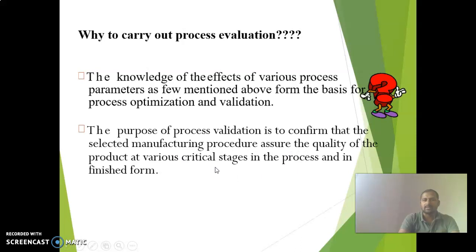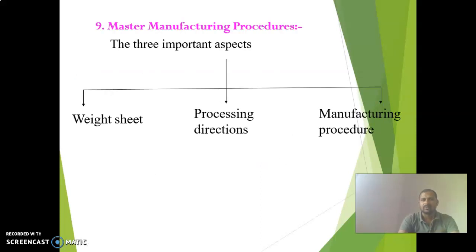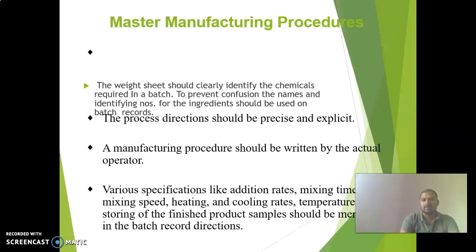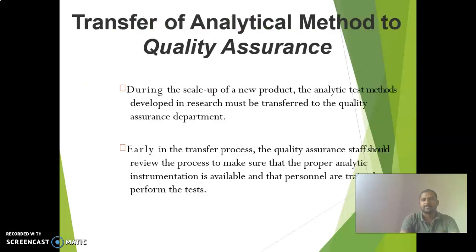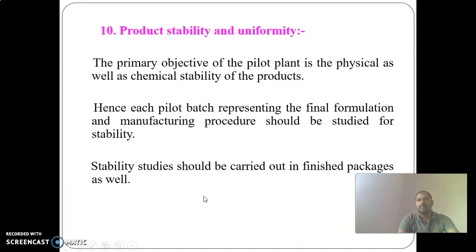The master manufacturing procedure includes three important aspects: weight sheet, processing directions, and manufacturing procedures. Regarding transfer of analytical methods to quality assurance: during scale-up, analytic test methods developed in research must be transferred to the quality assurance department. Early in the transfer process, QA staff should review the process to ensure the proper analytical instruments are available and that personnel are trained to perform the tests.